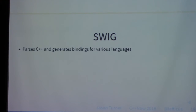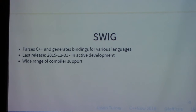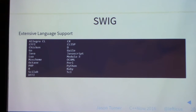Starting with SWIG: it parses your C++ and generates binding layers for various languages — a whole lot of them. Its last release was just before the new year, so it is actively in development. It has a wide range of compiler support. Tools like ChaiScript, Sol2, and PyBind11 require C++11 or C++14, but SWIG outputs very basic C++ and works with pretty much any compiler released in the last three or four years.